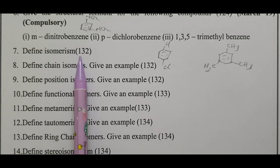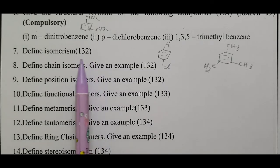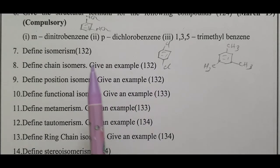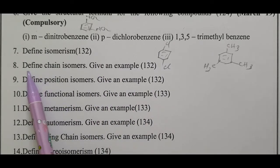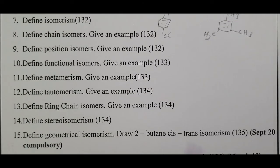IUPAC starting, characteristics of organic compounds, classification. Define chain isomers, give an example. Define position isomers, give an example. Define functional isomers, give an example. Define metamerism, give an example. Define tautomerism, give an example. Define ring-chain isomers, give an example. Define stereoisomerism.